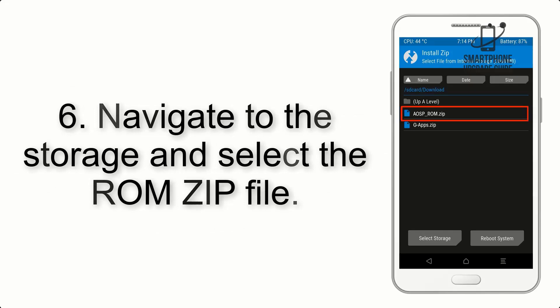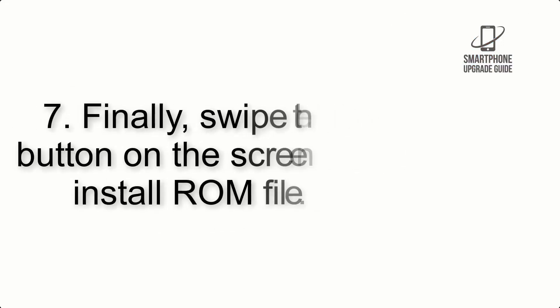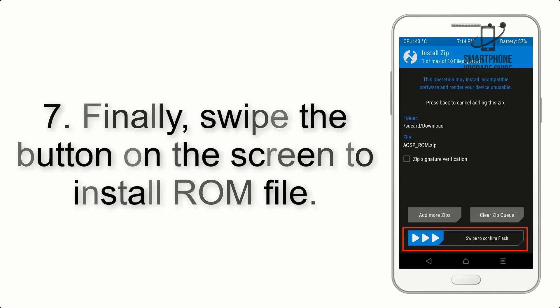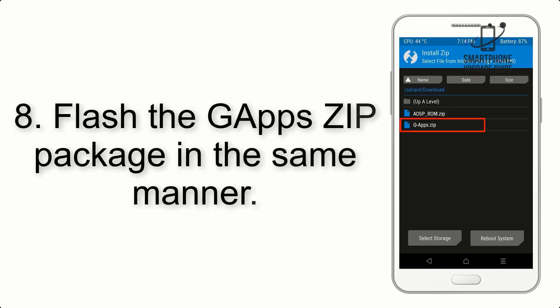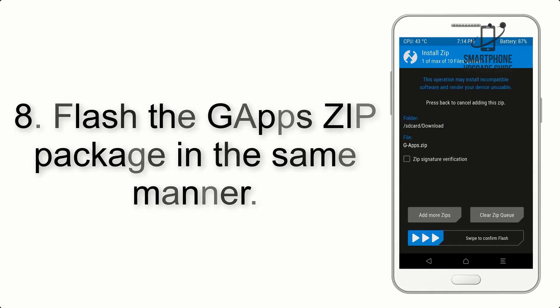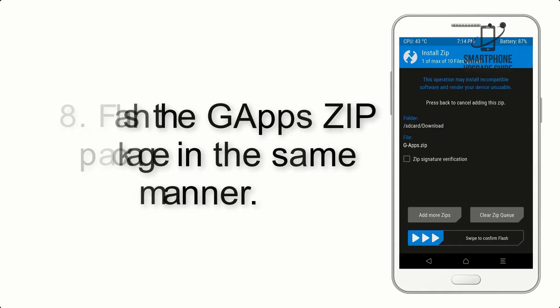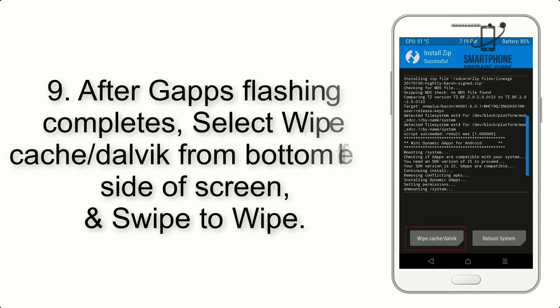Go back to the recovery main screen and tap on the Install button. Navigate to the storage and select the ROM zip file. Finally, swipe the button on the screen to install the ROM file.